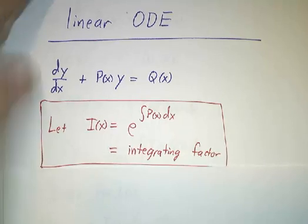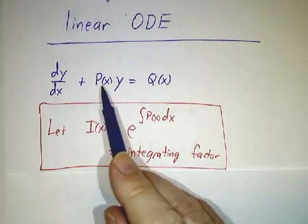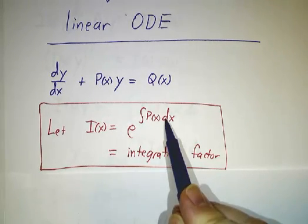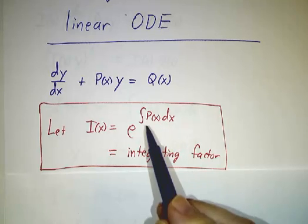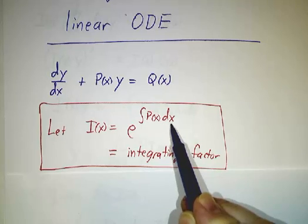We're going to use integrating factors and here's the formula for the integrating factor. To get the integrating factor, you find the integral of p dx and you exponentiate it. Now there's always a constant of integration when you take the integral of p dx. Pick whatever constant of integration you want.